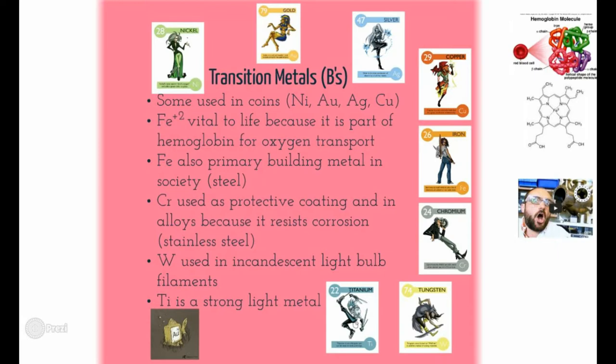Iron is important because it's necessary for oxygen transport in your red blood cells. It's also what gives structure and is the primary building metal in society — used massively to make steel. Chromium is used as a protective anti-corrosion coating. Nickel is added for flexibility so steel doesn't snap. Tungsten is used in incandescent light bulbs and also in projectors — it gives off a nice bright light. Tungsten is also what my wedding ring is made of — it looks like platinum but it's not, since tungsten is a lot cheaper.